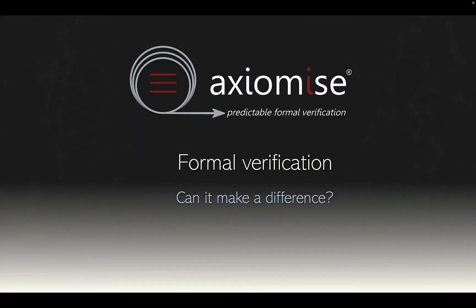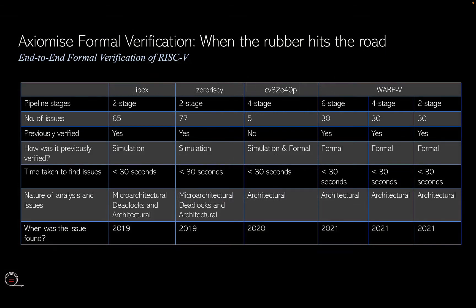Formal verification — can it make a difference? The short answer is yes. The proof is in the results that you see right in front of you. Every single RISC-V processor that we've verified with the Formalizer app has found new bugs — bugs that were previously missed by simulation, in some cases by other formal verification test benches. Whether you're talking about a 2-stage IBEX RV32E core or a 4-stage in-order embedded class CV32E40P core, or some of the more advanced WARP-5 cores, we are going to find bugs no matter what. That is because we are using the core of formal methods — the property checking methodologies — together with some of the finest tools in the market.